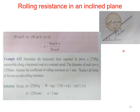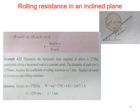For a wheel rolling on an inclined plane at angle θ with the horizontal: the weight W is resolved into components W cos θ and W sin θ, and the rolling resistance R makes angle α with the inclined surface. Taking moments about point A: W cos θ × a − W sin θ × R = 0. From this, the coefficient of rolling resistance a = W sin θ × R / W cos θ = R tan θ.